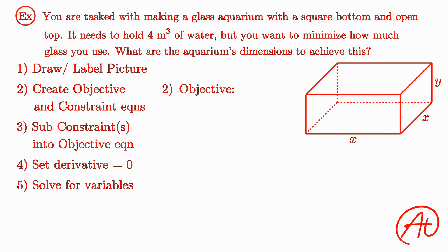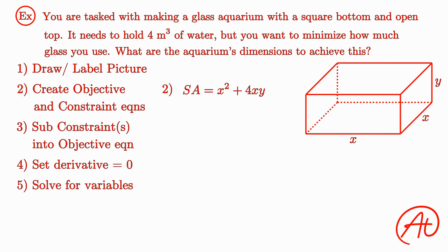This is often one of the most difficult steps for a lot of students, but you can make it a lot easier if you just take the shape one piece at a time. For example, let's start with the surface area of the bottom side. It has edges of x and x, so the surface area is just x times x. For the front, we find that the area is x times y, and we find the same for each of the other vertical sides. Finally, since the question says it has an open top, we don't have to count that. We can put together the surface area equation as x squared plus 4xy.